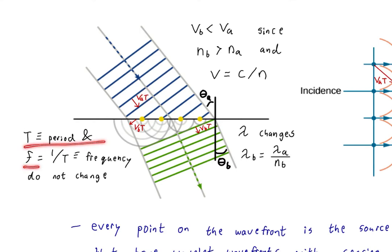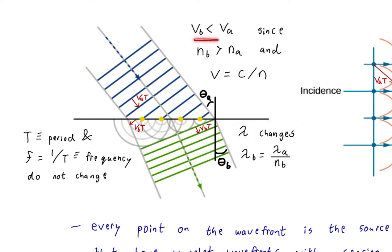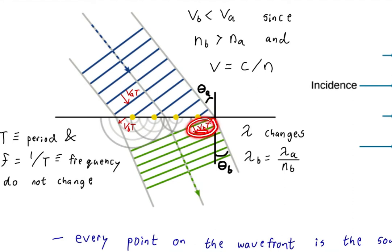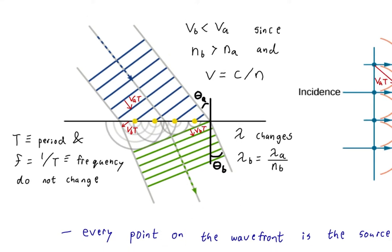The frequency and period never change when light travels from one material to another. So if they don't change, what does? Lambda changes. Since we have a new, smaller velocity but the same period, the new smaller velocity times the same period gives us a shorter wavelength. For example, if glass has a refractive index of 1.4, the velocity of light within glass is the speed of light — 300 million meters per second — divided by 1.4.